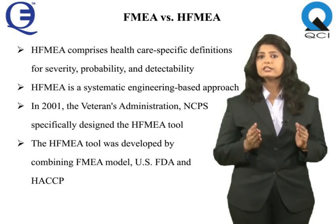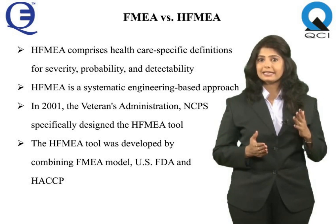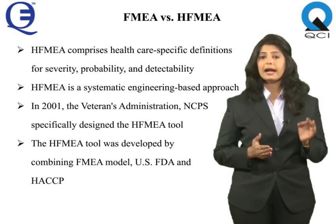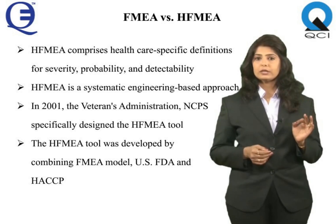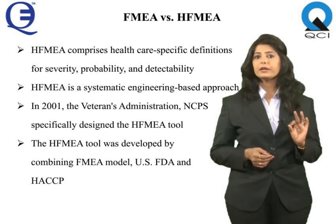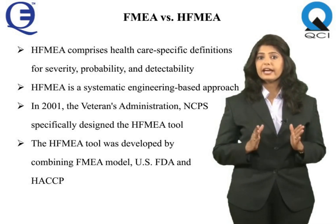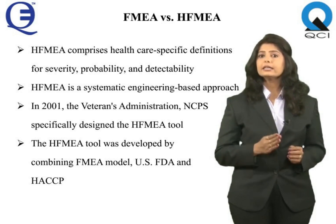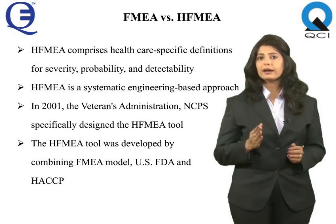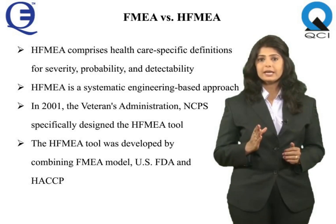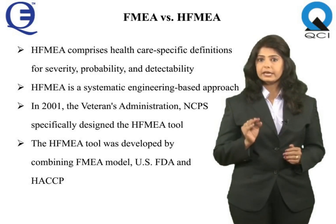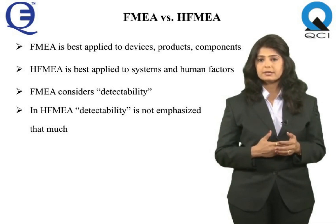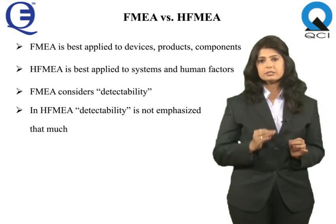HFMEA comprises healthcare-specific definitions for severity, probability and detectability. It is a systematic engineering-based approach used to identify system vulnerabilities and correct problems in healthcare before they occur. In 2001, the Veterans Administration (VA) National Center for Patient Safety (NCPS) specifically designed the HFMEA tool for risk assessment in healthcare. FMEA is best applied to devices, products and components, whereas HFMEA is best applied to systems and human factors.